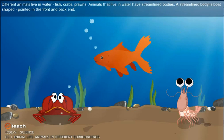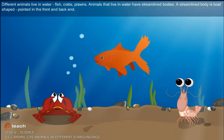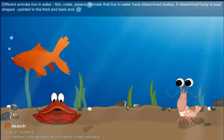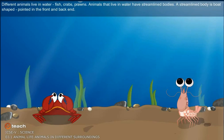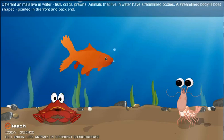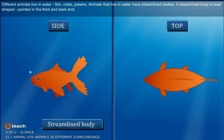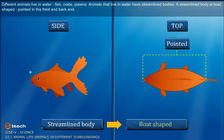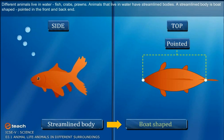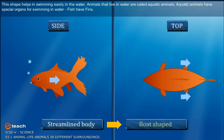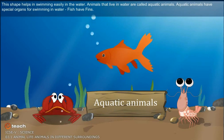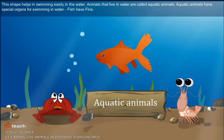Different animals live in water — fish, crabs, prawns. Animals that live in water have streamlined bodies. A streamlined body is a boat shape: pointed in the front and back end. This shape helps them swim easily in the water. Animals that live in water are called aquatic animals.